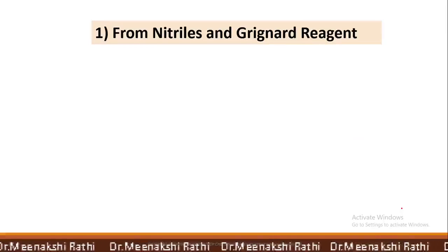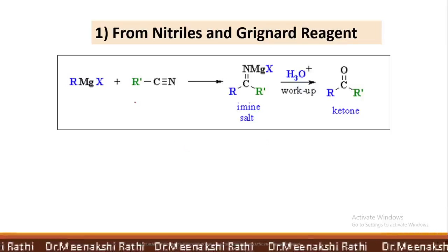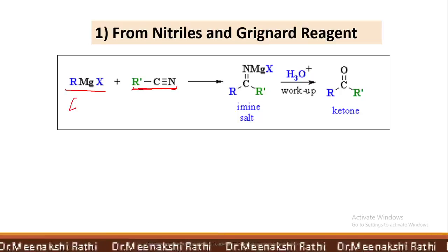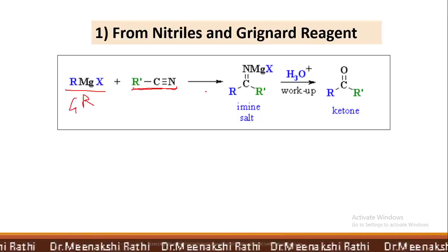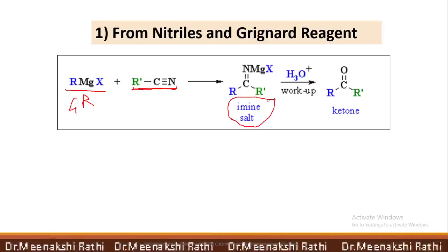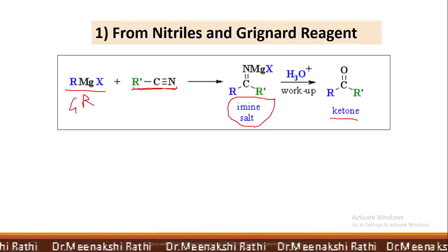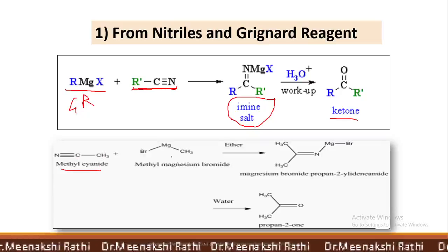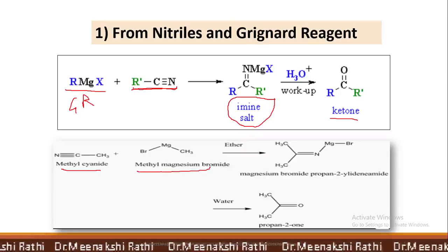The next method for the preparation of ketones is from nitriles and Grignard reagent. Nitriles means cyanides. When RMgX, that is Grignard reagent, adds to alkyl cyanides in the presence of dry ether, it first forms imine salts. These imine salts get hydrolyzed and we get ketones. Here, methyl cyanide CH₃CN reacts with methyl magnesium bromide, a Grignard reagent, in the presence of dry ether.